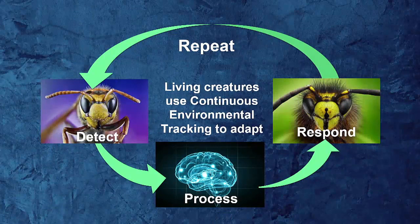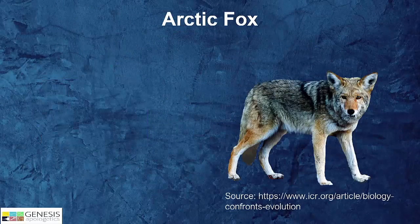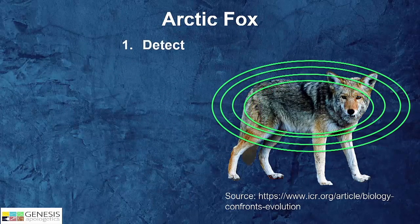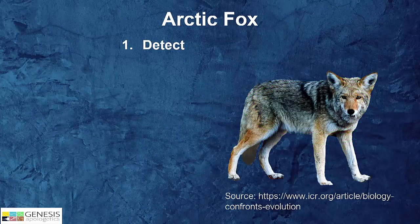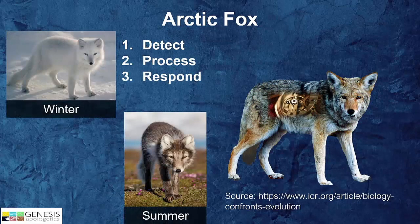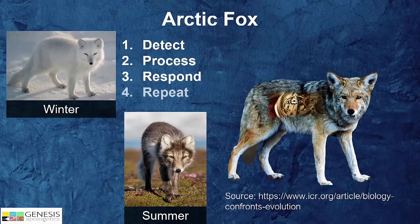Animals do the same thing. Take the Arctic fox — he actually detects the changes in weather and conditions around him. In wintertime he turns his coat white, and in summertime it'll be brown. This helps him hunt and stay safe from predators. The pattern is continuous environmental tracking: detecting, processing, responding, and repeating.